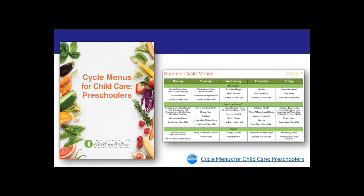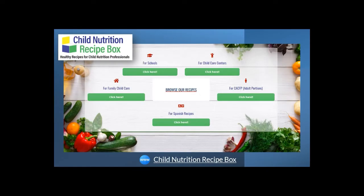The Institute of Child Nutrition, or ICN, which is an organization funded by USDA to provide technical assistance for child nutrition programs, has a resource titled Cycle Menus for Childcare Preschoolers. It includes 16 weeks of menus divided into the four seasons. Menus include some recipes from the ICN Child Nutrition Recipe Box, which are hyperlinked from this resource. While this resource indicates it is for preschoolers, menu ideas and recipes are applicable to all programs. The ICN Child Nutrition Recipe Box includes standardized recipes for child care centers, family child care, adult portions for adult daycare centers, and recipes in Spanish. Recipes for child care centers and adult portions are for 25 or 50 servings, while recipes for family child care are for 6 servings.